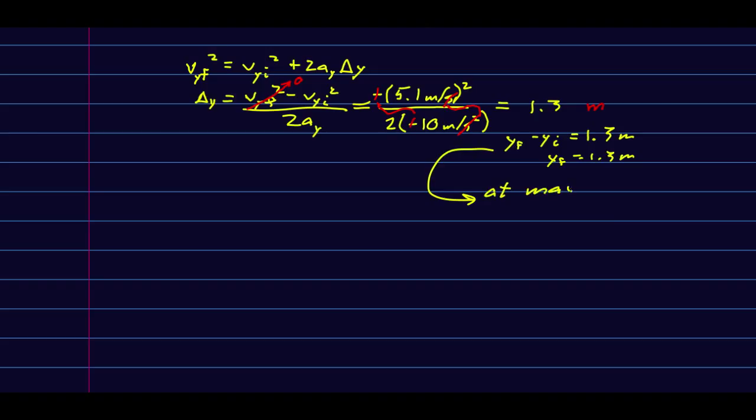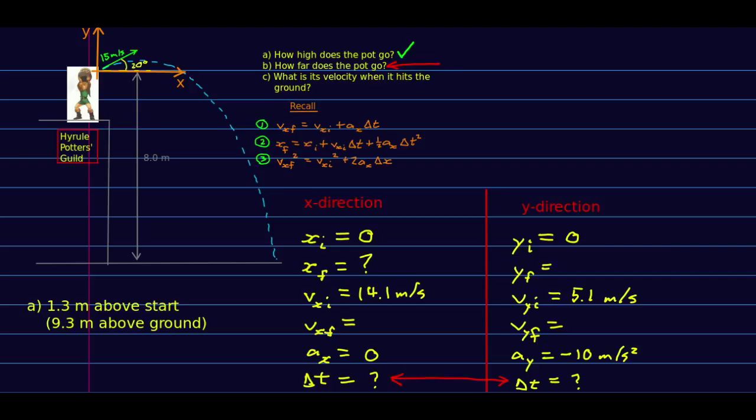At max height, it is 9.3 meters above the ground, because it started 8 meters above the ground. If it goes up 1.3 meters, it's going to be 9.3 meters above the ground.